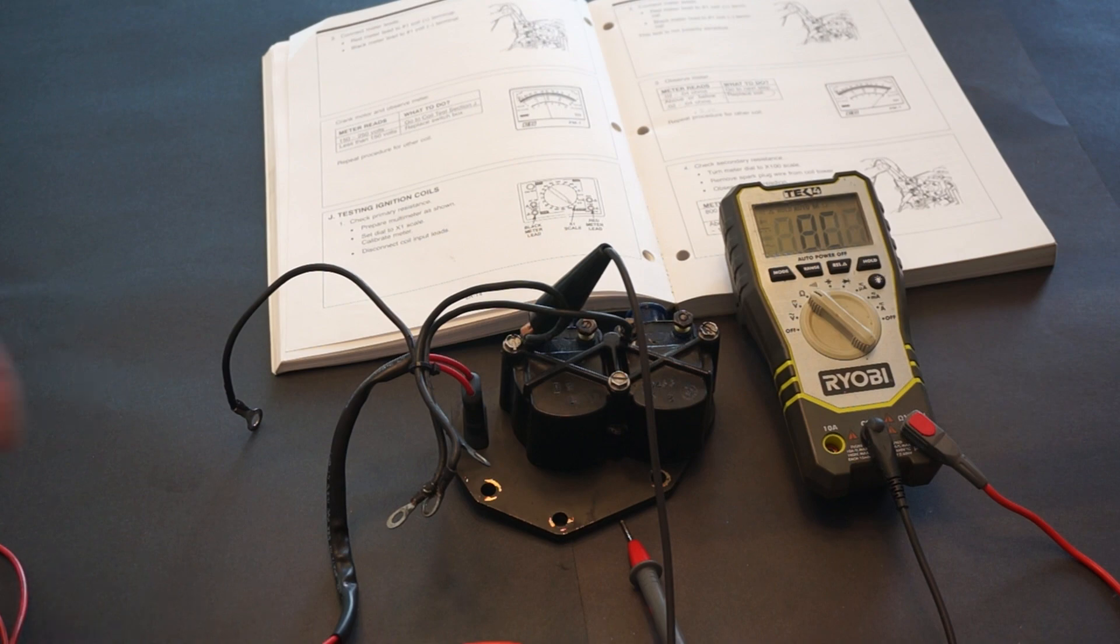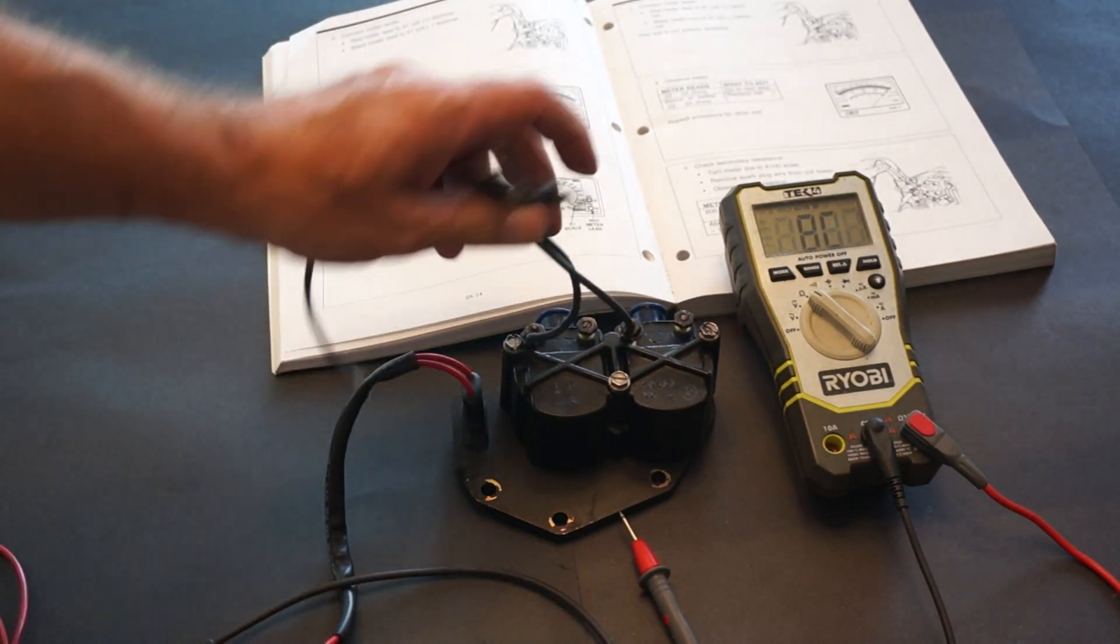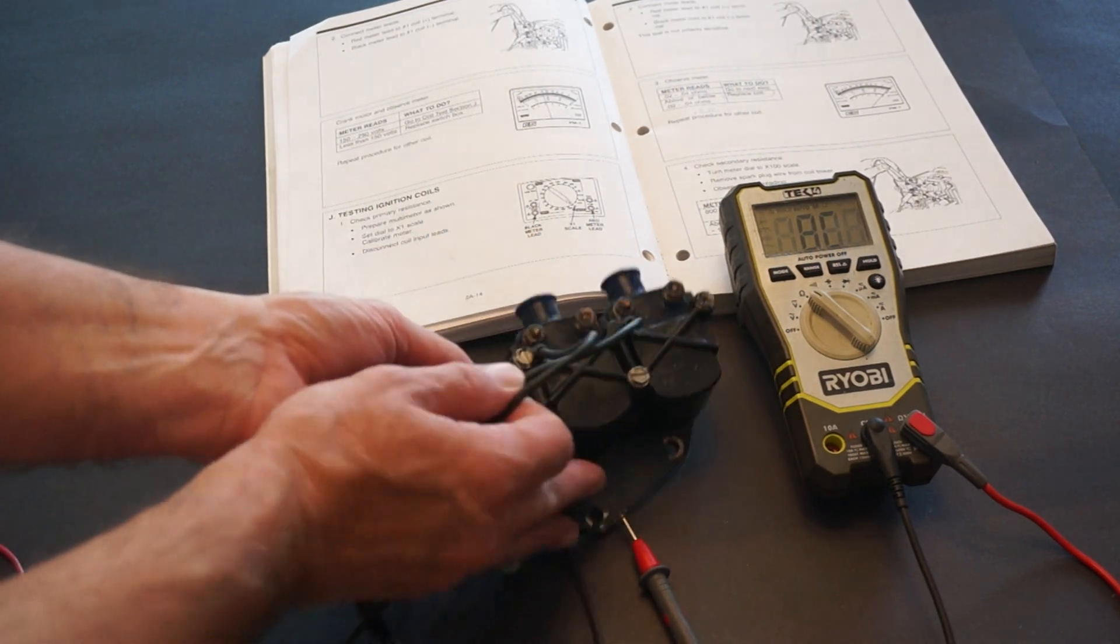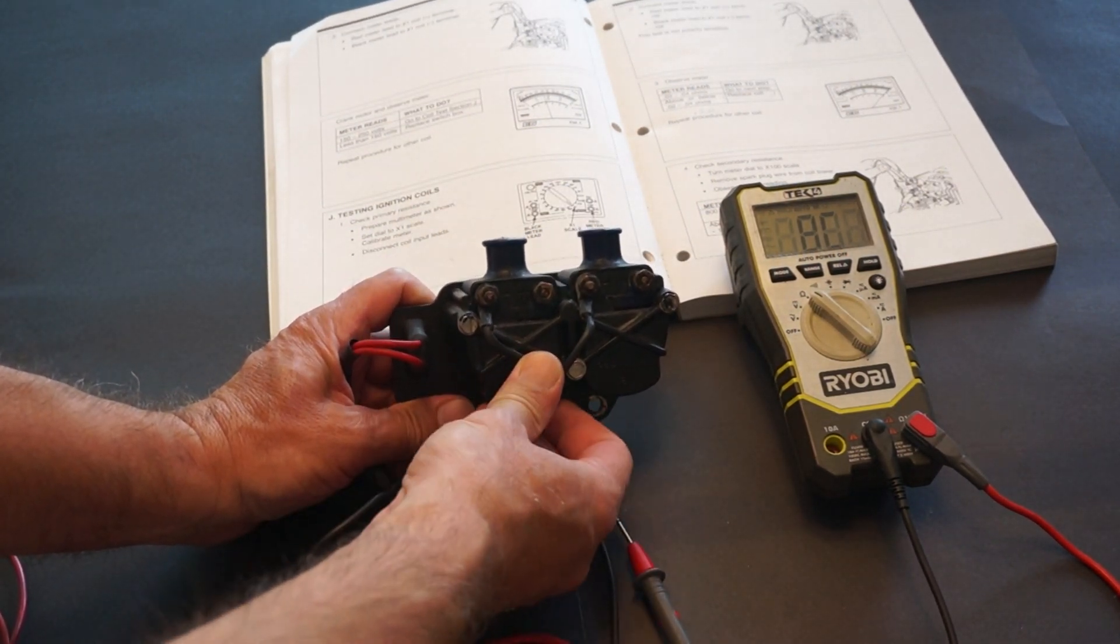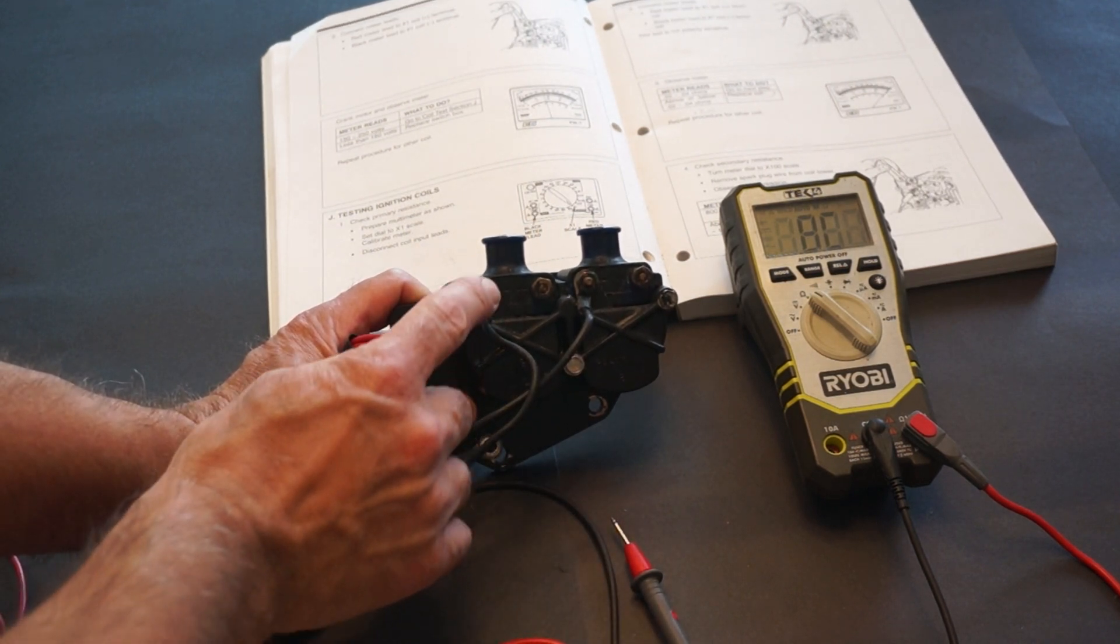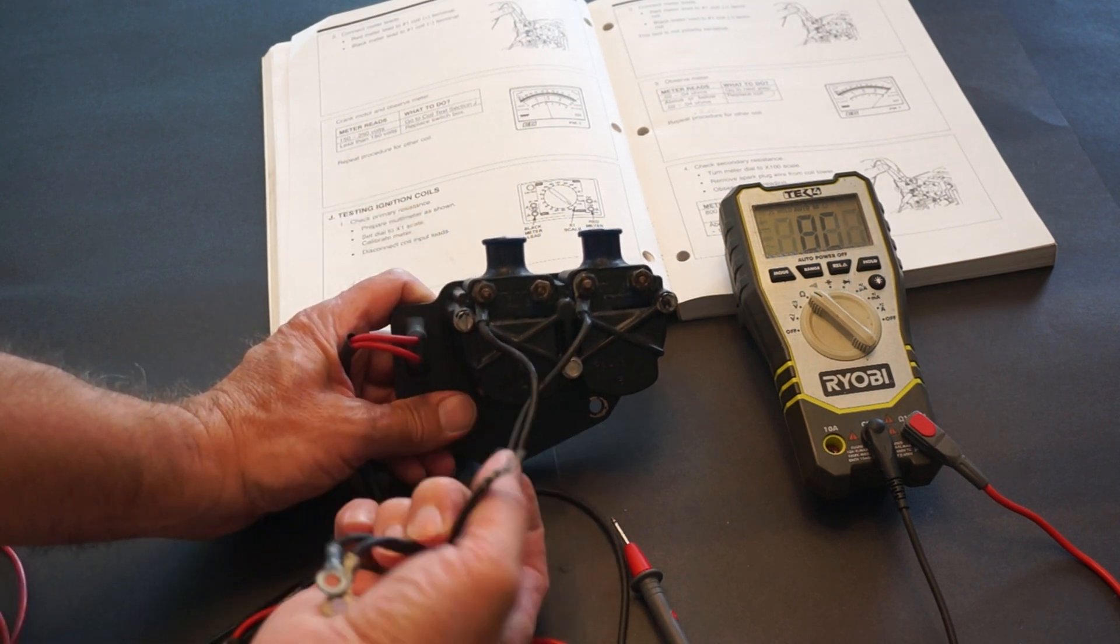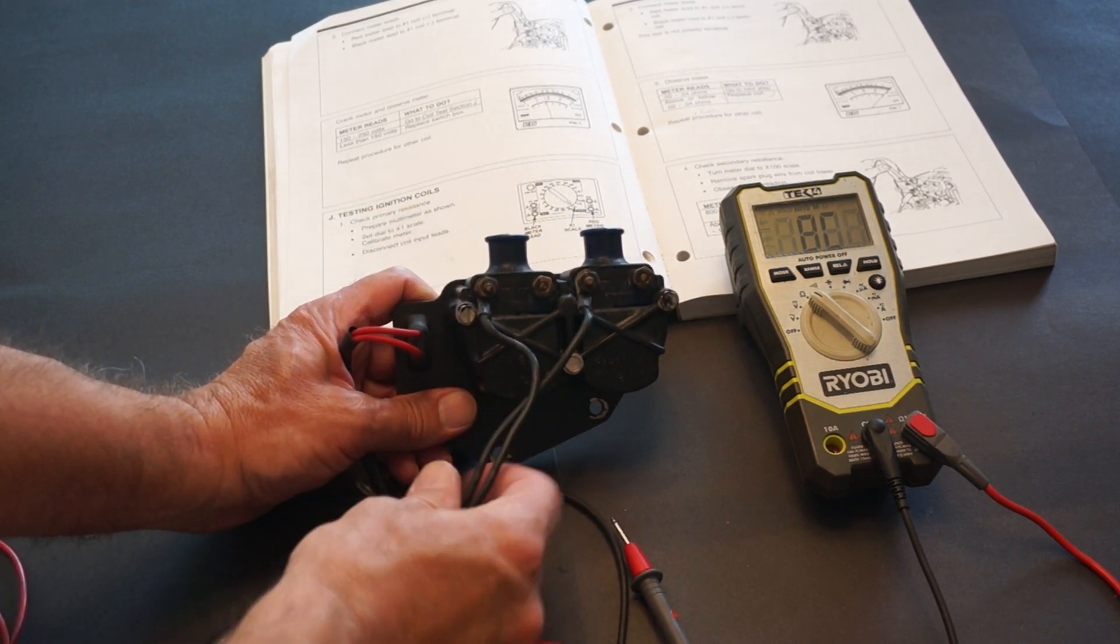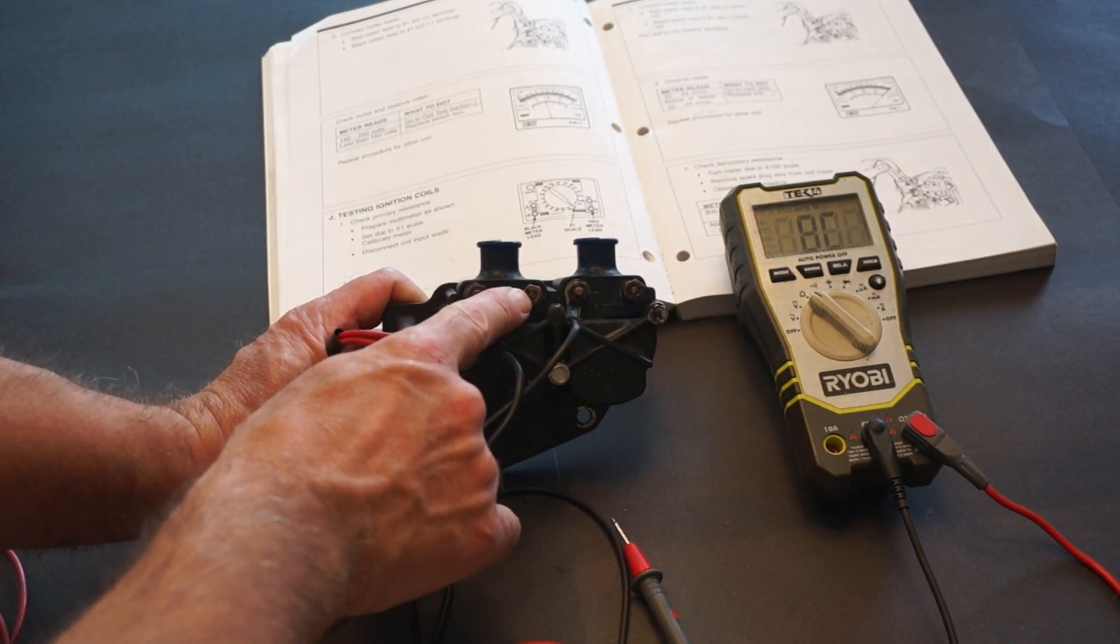There are two windings in every single ignition coil. There is a so-called primary winding or primary resistance. It goes between the outside negative part of the harness, which is the engine block, and the positive.